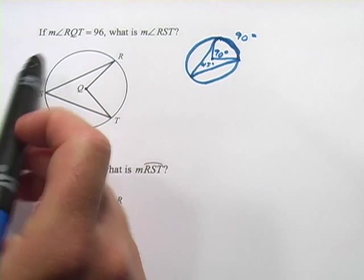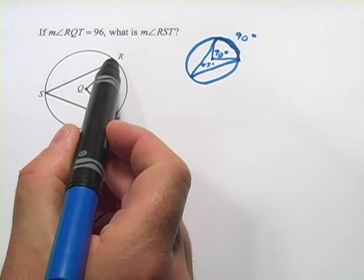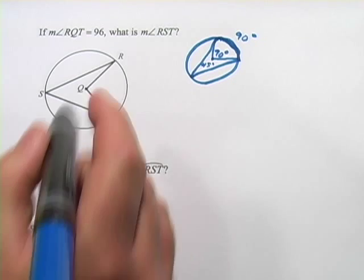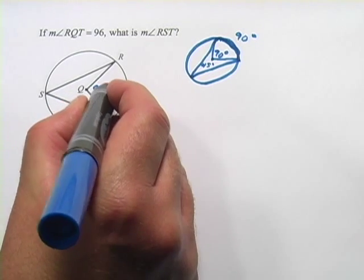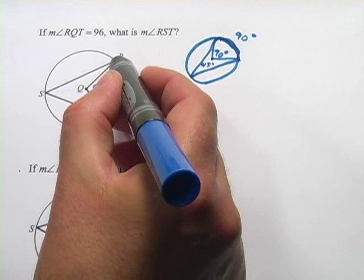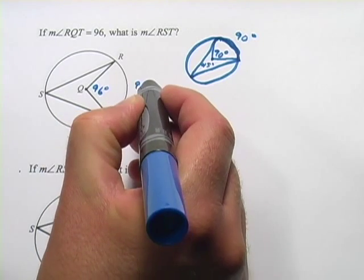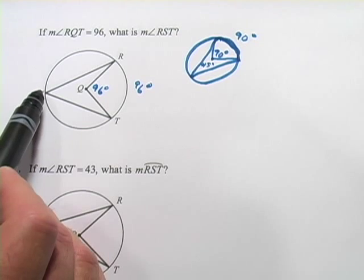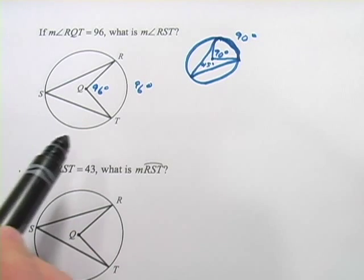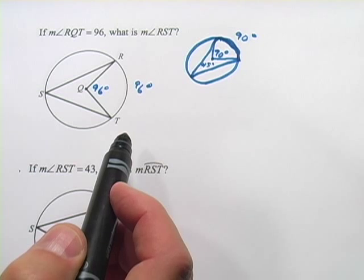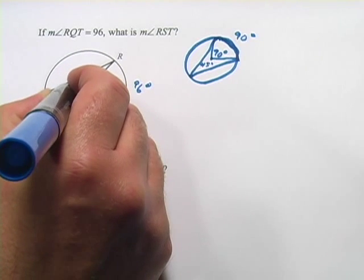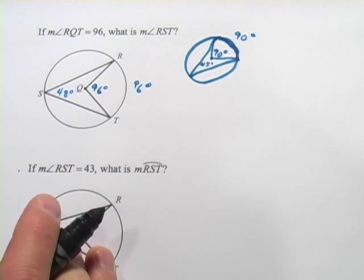So let's try a couple of these. The first one says if the measure of angle RQT, now that is a central angle that starts in the center of the circle, is 96, so that means this is 96, that means the arc length here is going to be 96. What is RST? Well, that's the angle that starts from the opposite side of the circle, and as I mentioned, it's going to be half of that, so 96 divided by 2. So that's going to be 48 degrees, and that's our answer.